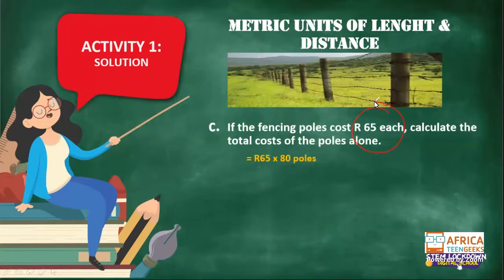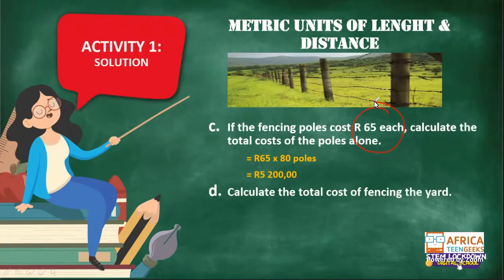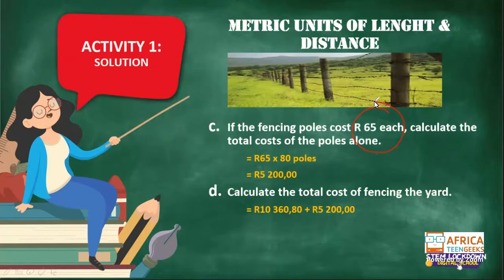Part C: if the fencing poles cost R65 each, calculate the total cost of the poles alone. From our previous answer in part B, we've got 80 poles, so all we do is 80 times R65 each, and that gives us R5,200. Then part D — calculate the total cost: the fence costs R10,360 rand 80 cents, plus the poles cost R5,200, giving a total of R15,560 rand and 80 cents to put the fence around his yard.